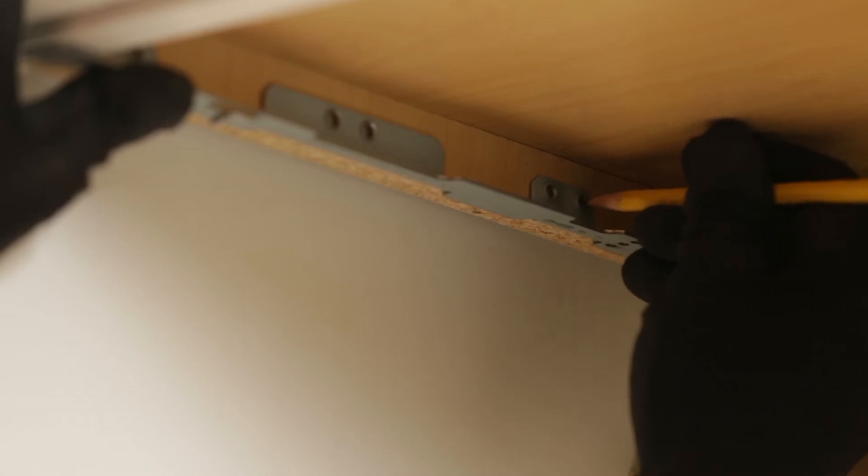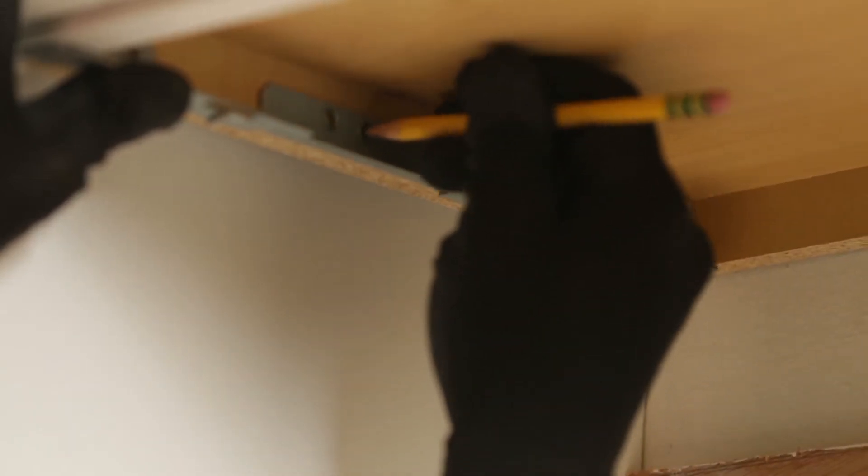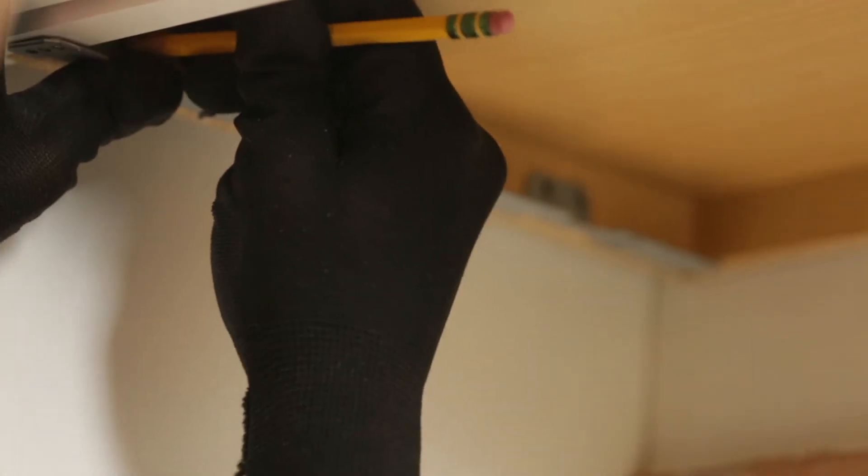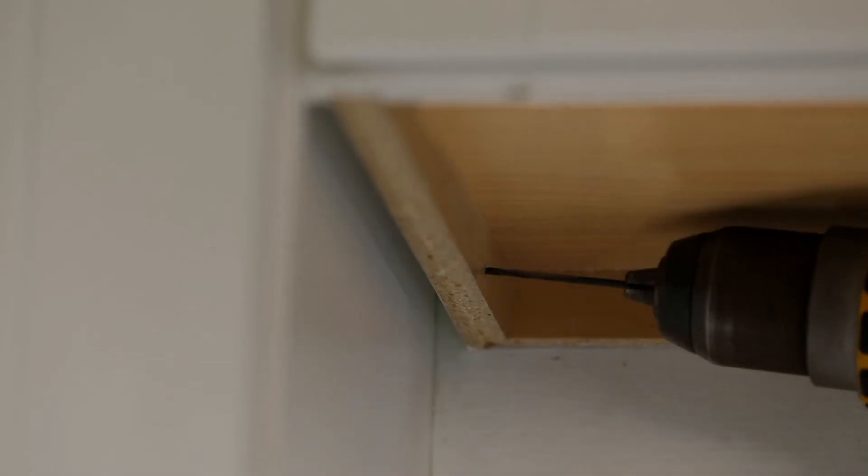Hold the bracket up to the cabinet, making sure the back of the bracket is against the back wall. Then, mark three screw holes. Use a 7⁄64 inch drill bit to drill pilot holes at your pencil marks. Then, secure the brackets with included wood screws.